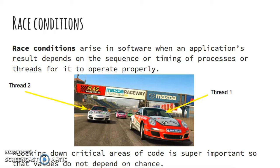Race conditions arise in software when an application depends on the sequence or timing of threads for it to operate properly. Basically, the program works by chance. As such, when you run it one time, you may get a different answer from when you run it again. Critical race conditions often happen when the threads depend on some shared state and result in incorrect values. Therefore, locking down critical areas of code is extremely important so that values do not depend on chance.